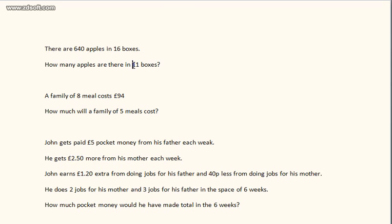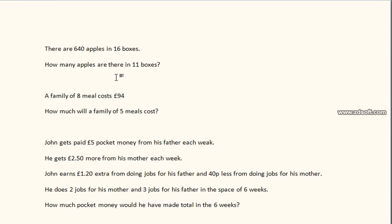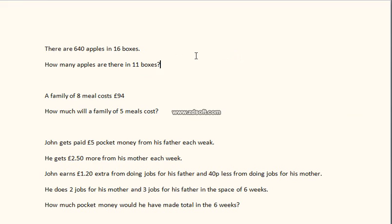Now if there are 40 apples in one box and we need 11 boxes, we times 40 by 11. You all know what 40 times 10 is — 400. So in 10 boxes there are 400 apples. Just add another 40 and we've got the answer: 440. There's your answer.